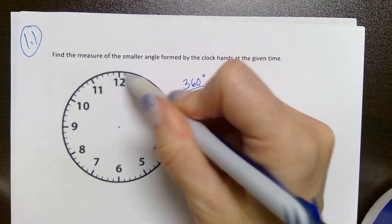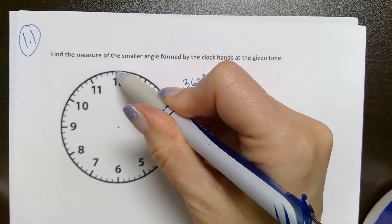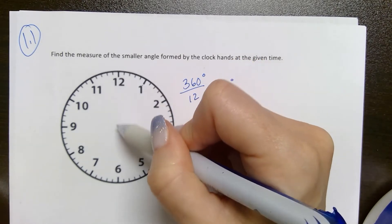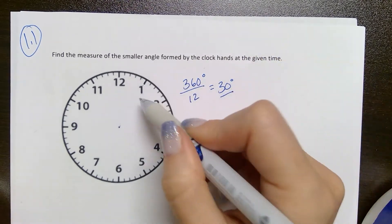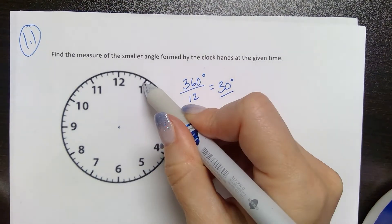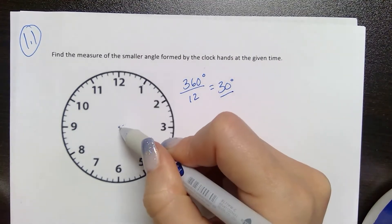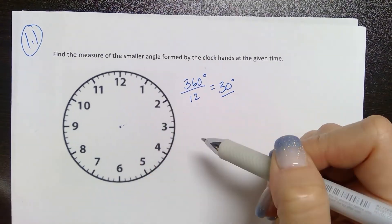each time the hand moves a full 5 minute representation on the clock. So if it moves from 12 to 1, it has rotated 30 degrees. If it moves from 1 to 2, it has rotated 30 degrees because that's the size of that central angle for each of those units.